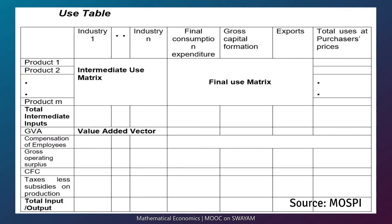This is the format of the use table. This table shows for each product across columns the use of the product by type of use: intermediate use or final use.